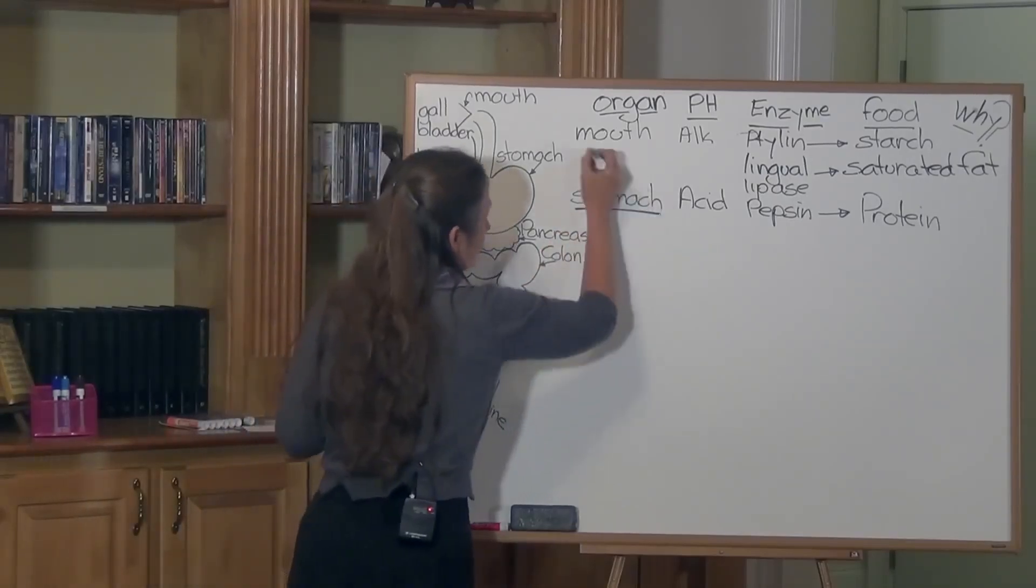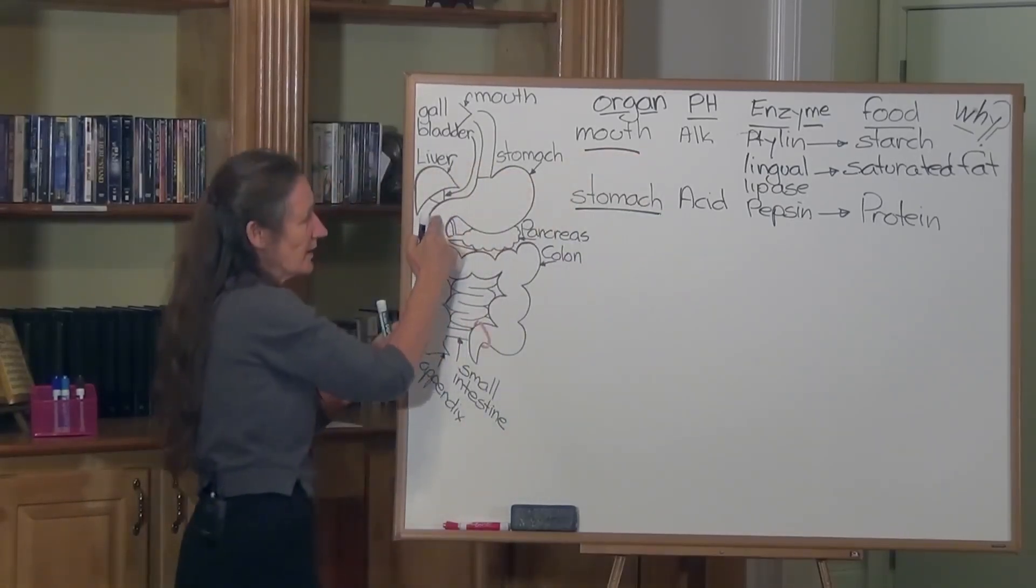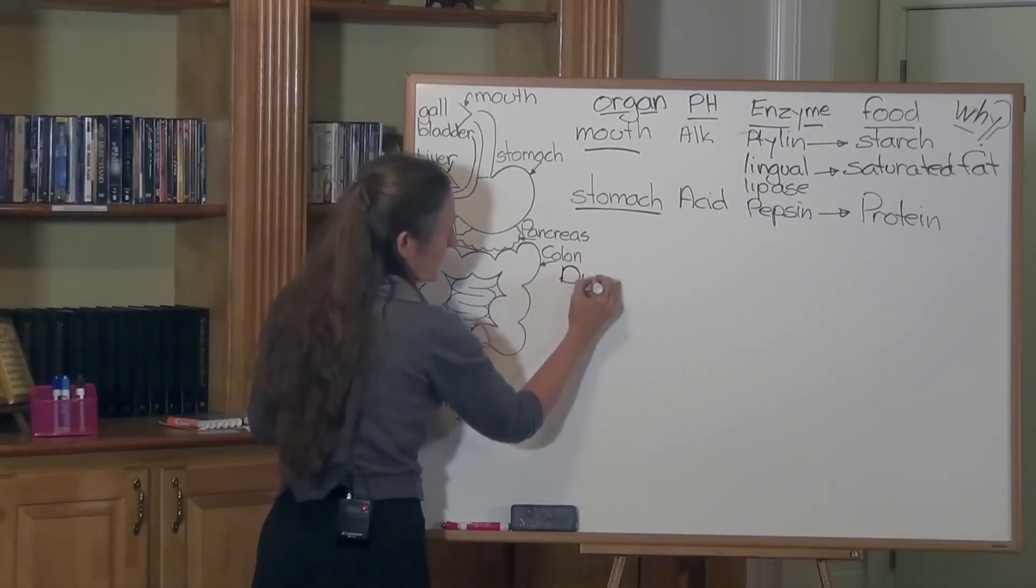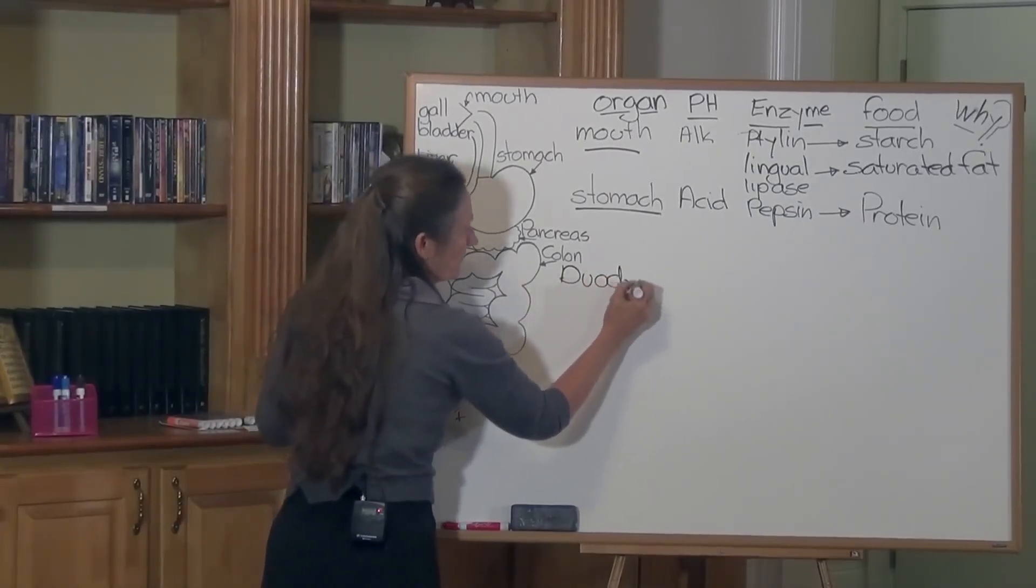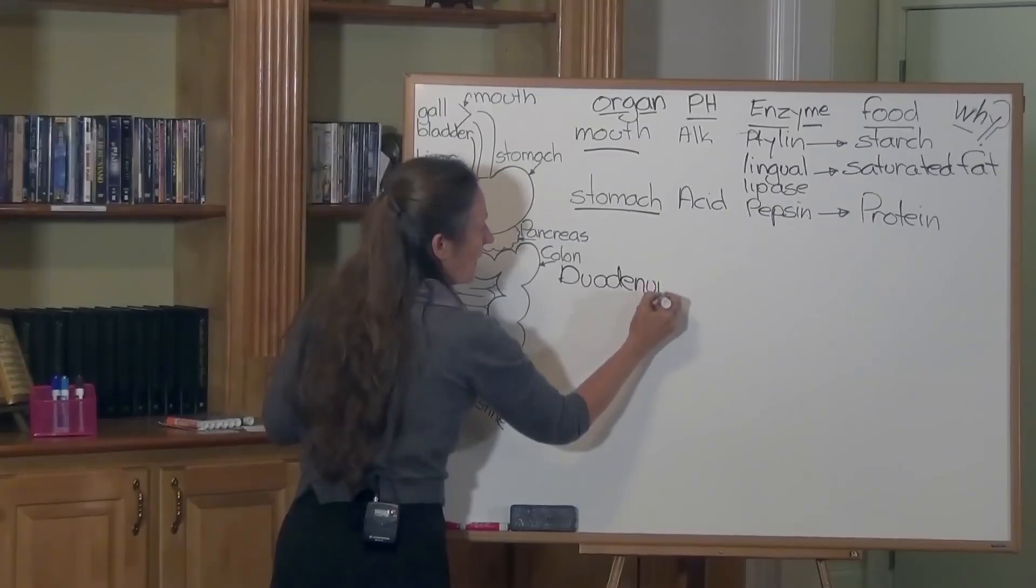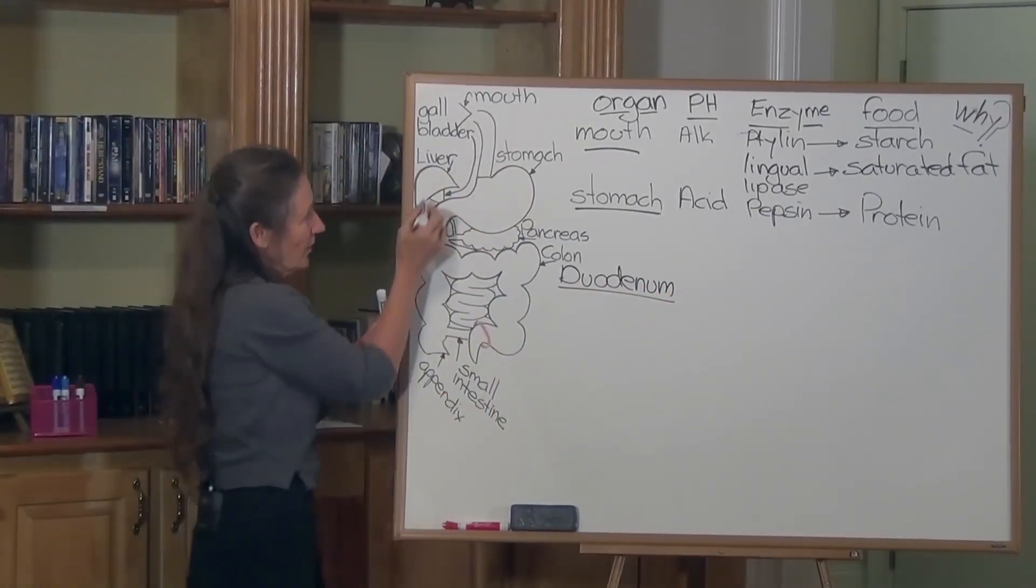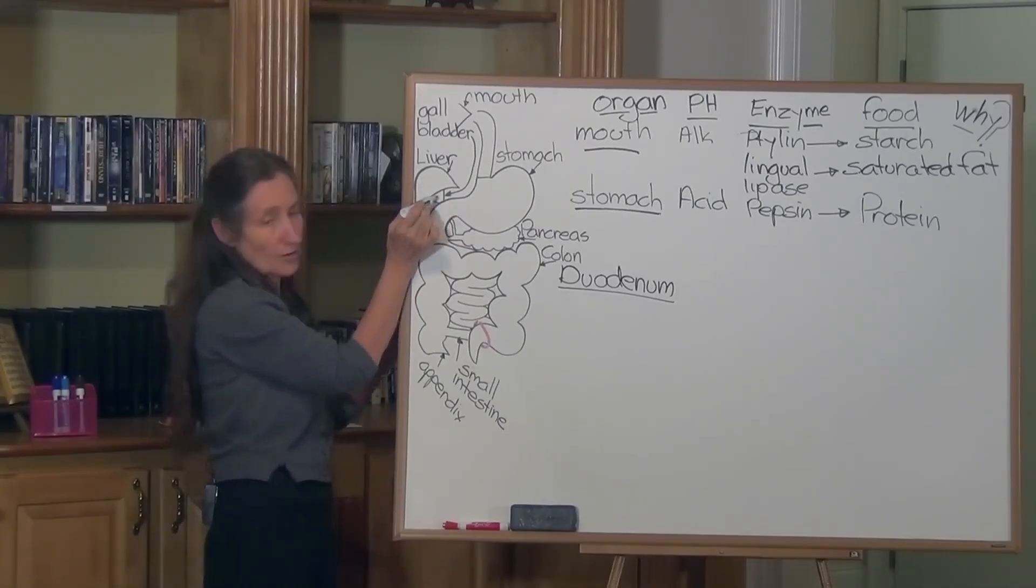We move through and come to the first part of the small intestine, which is called the duodenum. The duodenum has two main organs that are emptying into it. Notice we've got the liver here, the gallbladder.